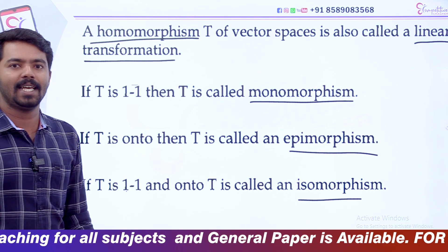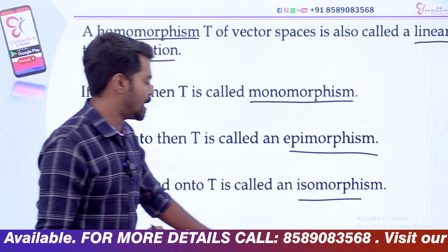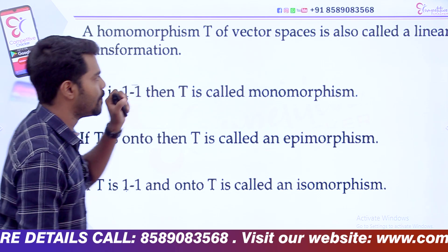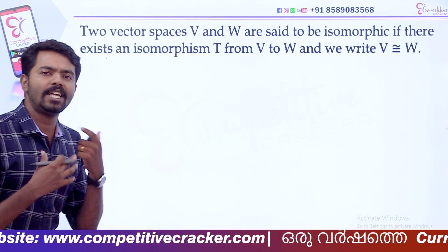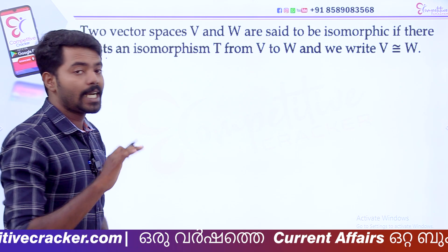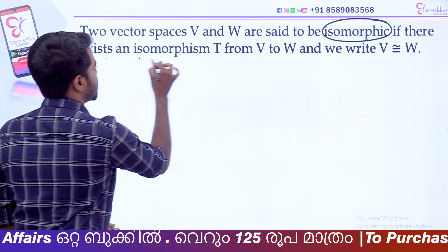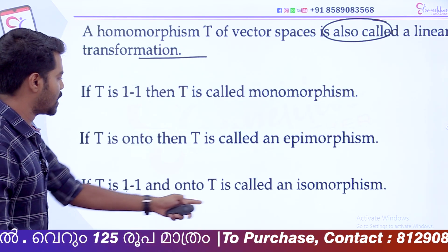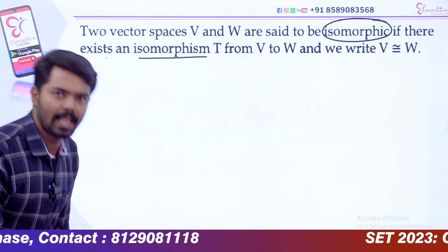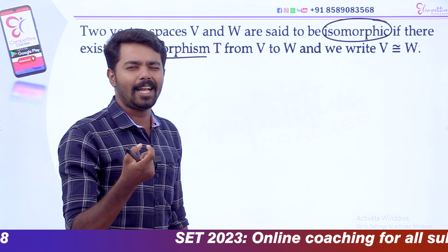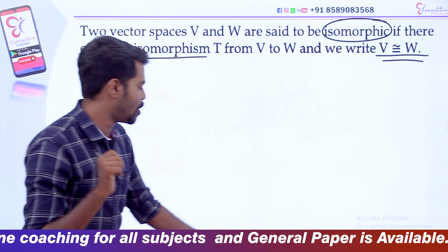If T is both one-one and onto, we call it isomorphism. Isomorphism is so important. The result is two vector spaces — we can define vector spaces as isomorphic if there exists an isomorphism. V is isomorphic to W.